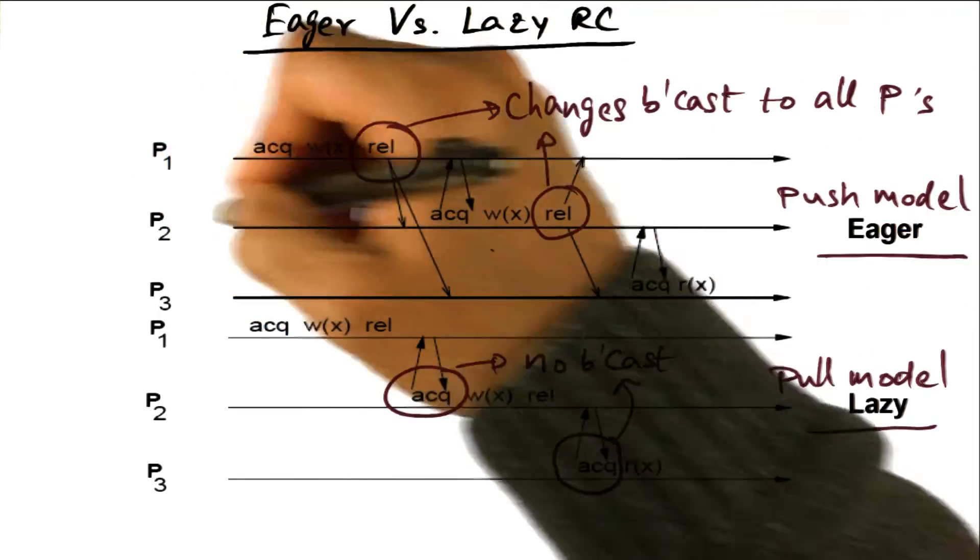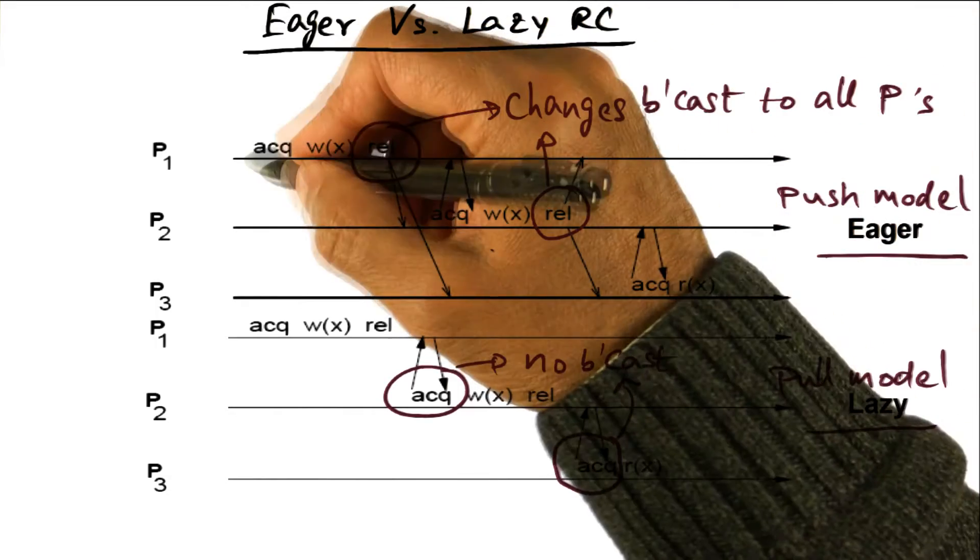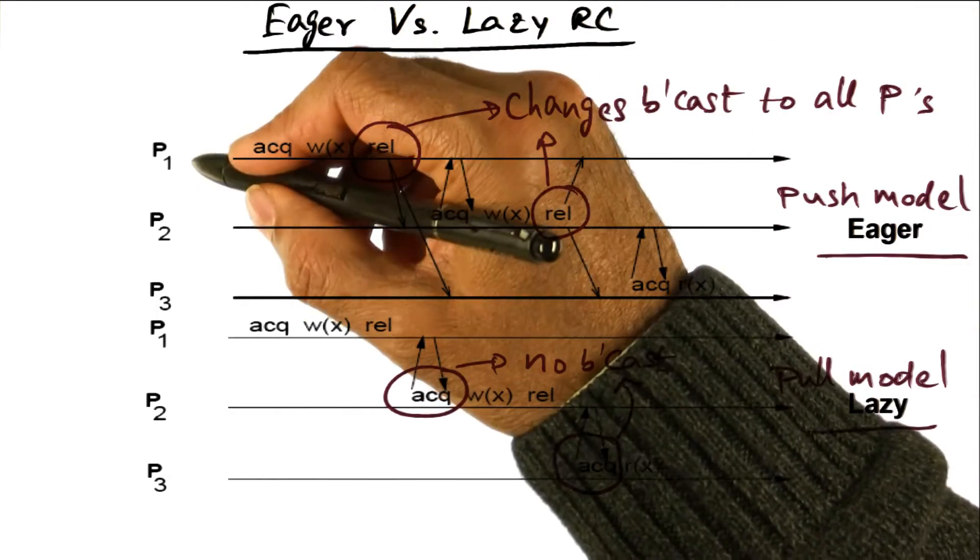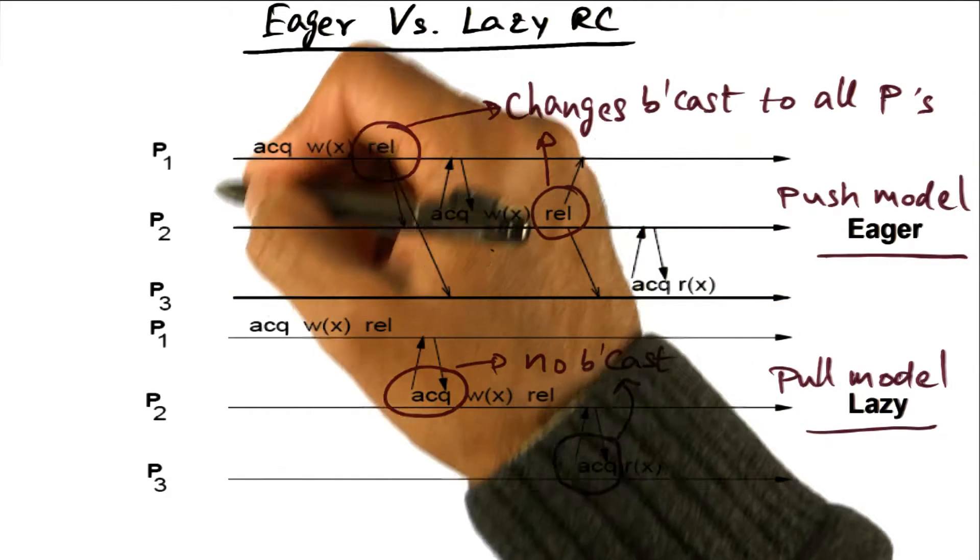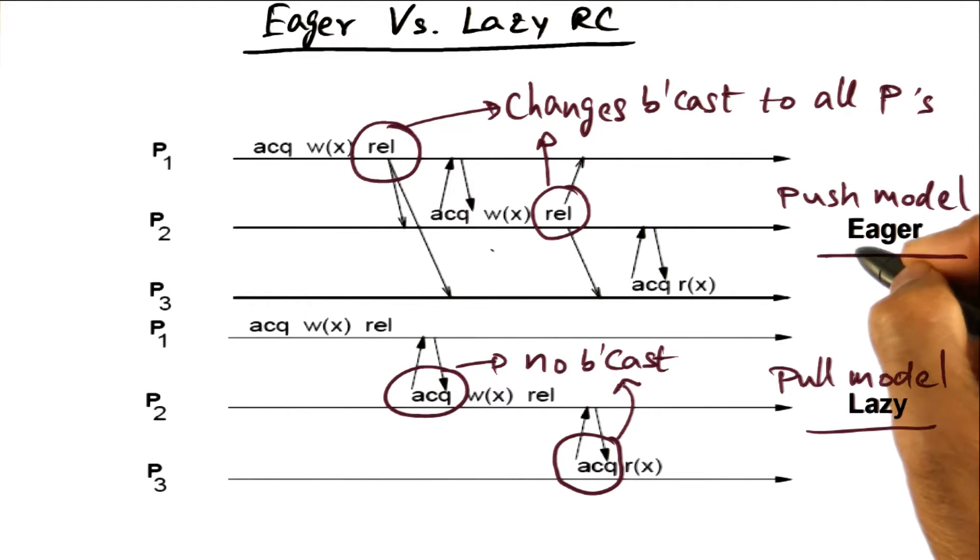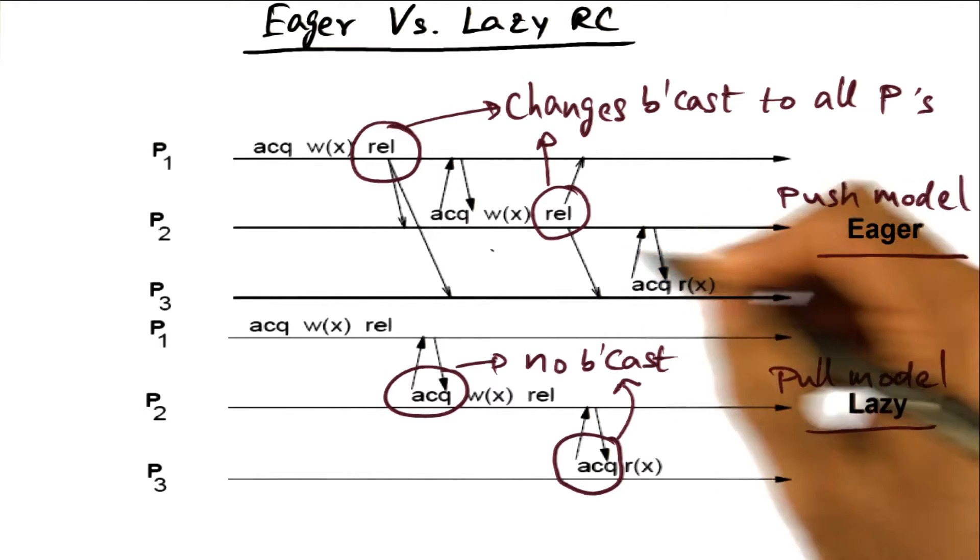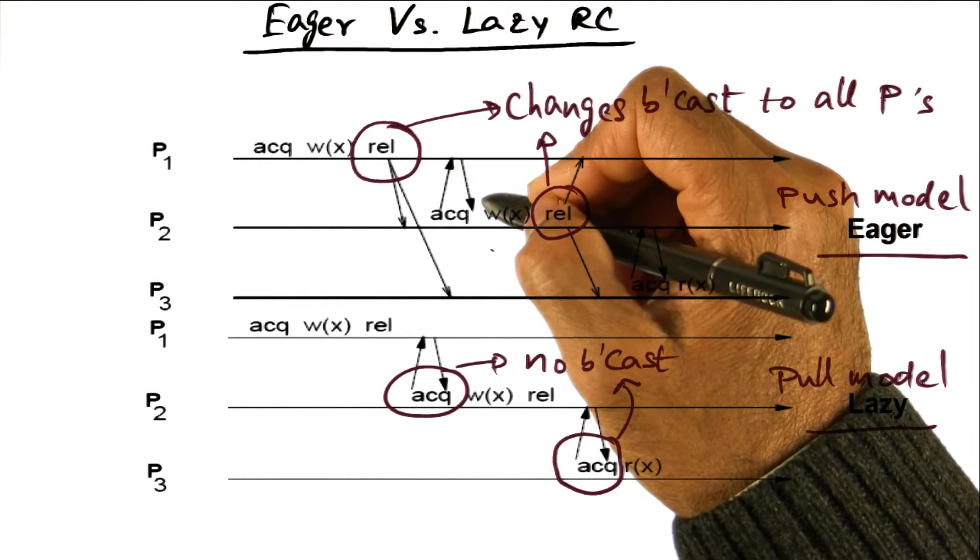So what I'm showing you here are timelines of processor actions on three different processes, P1, P2, and P3. And this picture is showing you what happens in the eager version of the RC model in terms of communication among the processors.